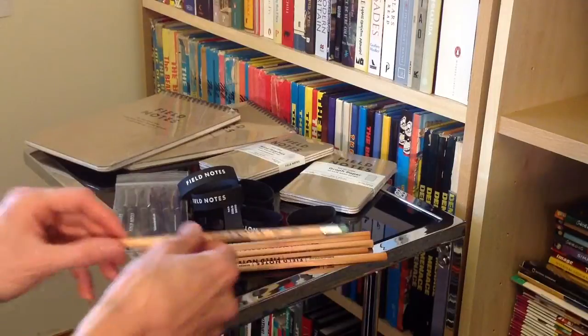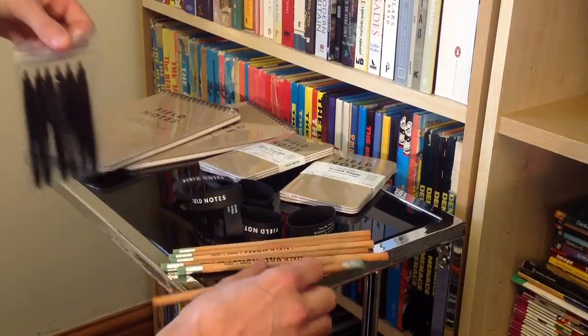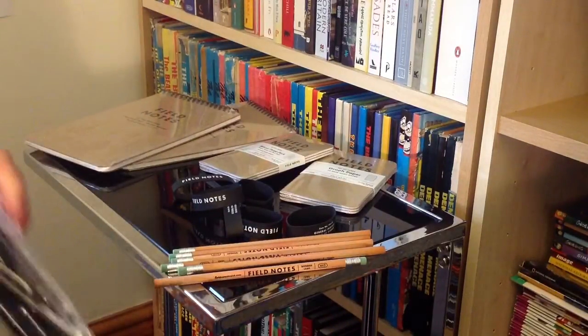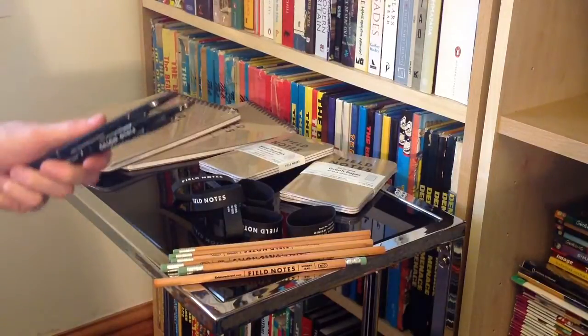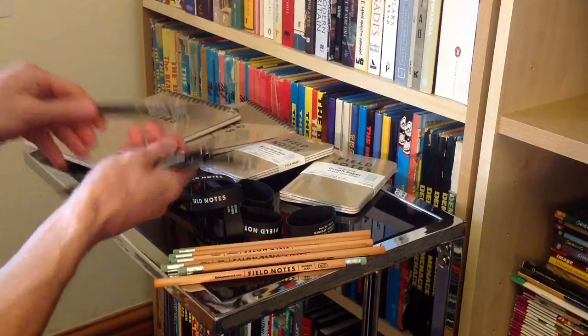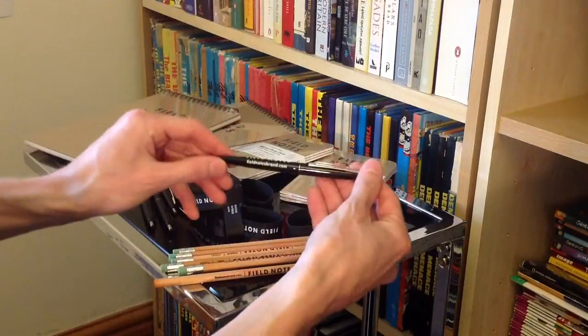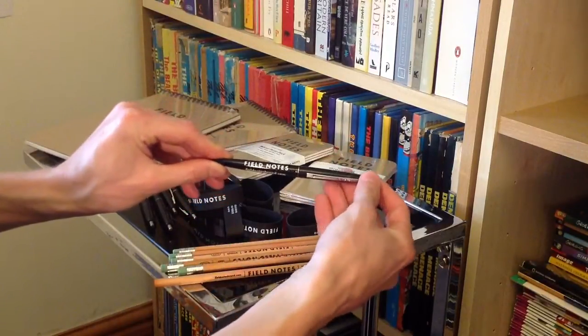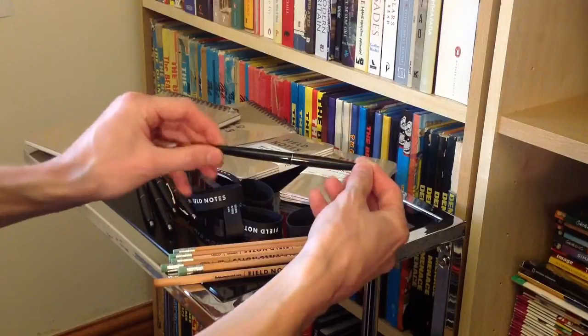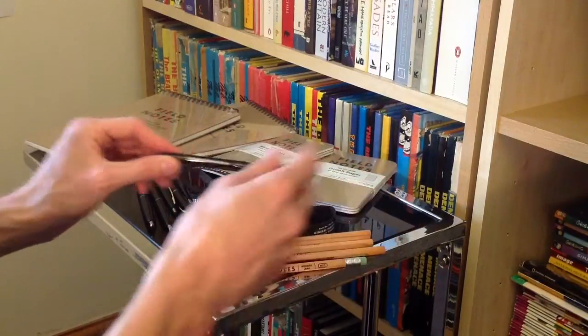I suppose we'll have a closer look at these, I'll open the pens as well and we'll have a closer look at them. And once again, having a look at the pen here, you can see we've got just Field Notes in white and the website. Nice, plain black, silver and white. Lovely jubbly.